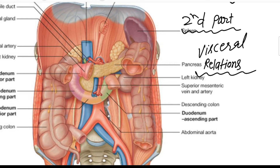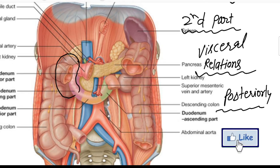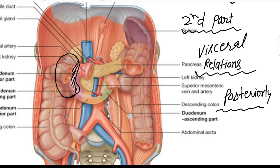The anterior relations of the second part are: the right lobe of the liver, the transverse colon, the transverse mesocolon, and coils of the small intestine in the lower part. Posteriorly, the duodenum is related to the medial border of the right kidney, along with the renal vessels.